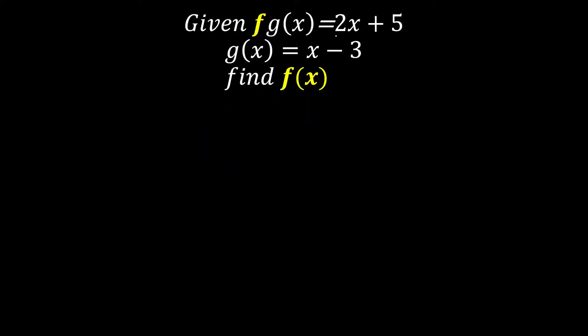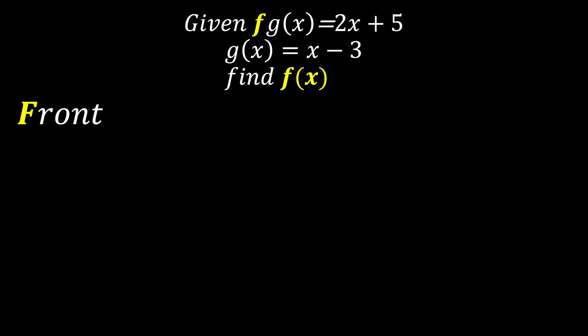Let's see the question: fg(x) is 2x plus 5, g(x) is x minus 3, and we are asked to find f(x). Using the FISH method — first, verify whether we are finding the front function. We know they're asking to find f, which is at the front, so we're done with step one.